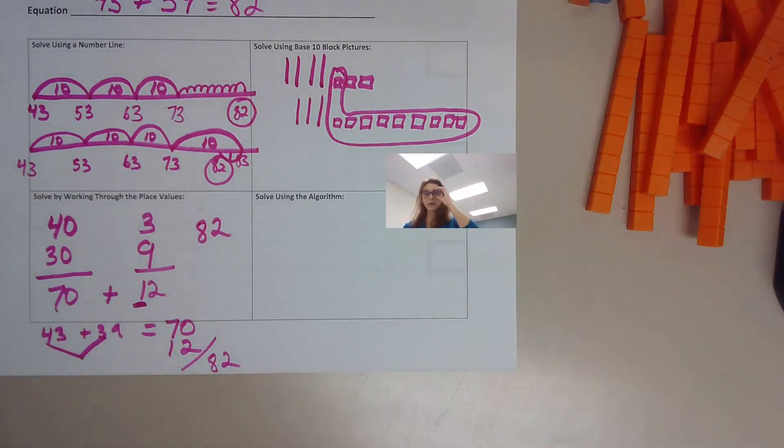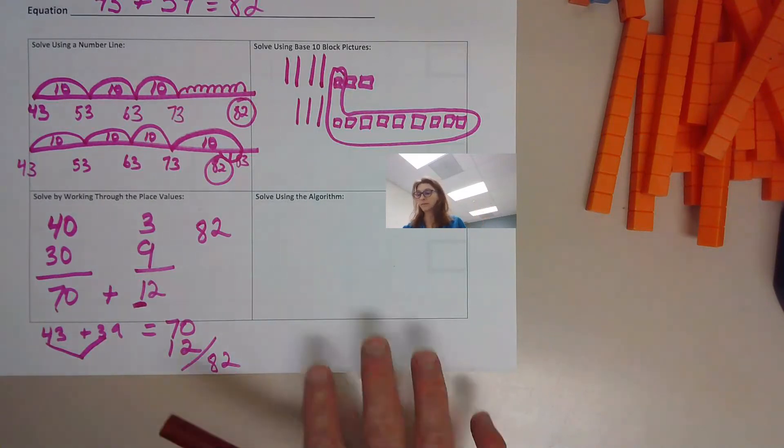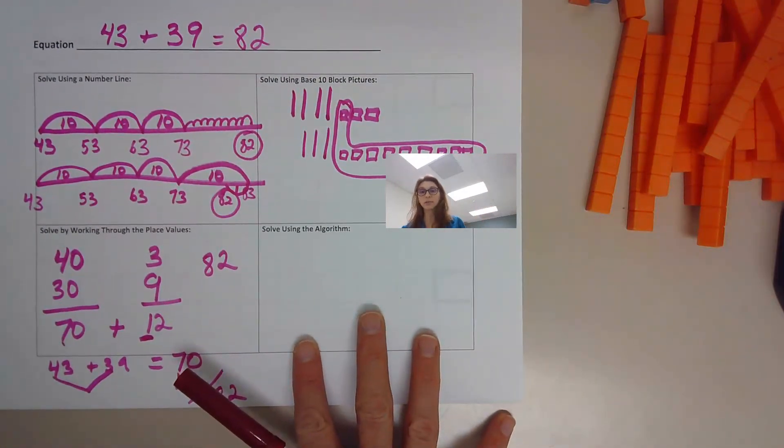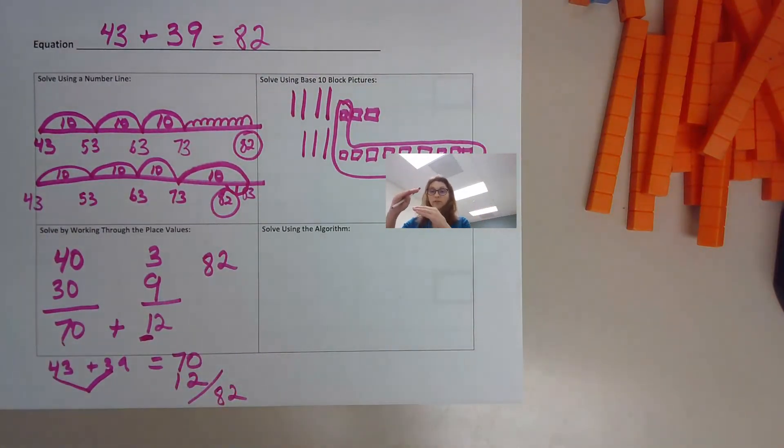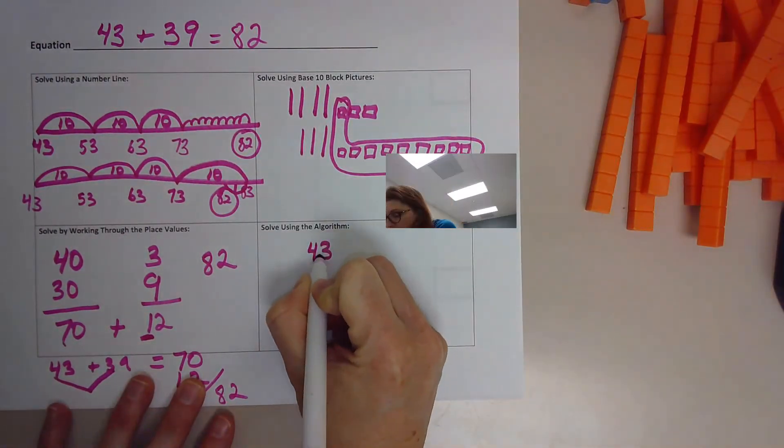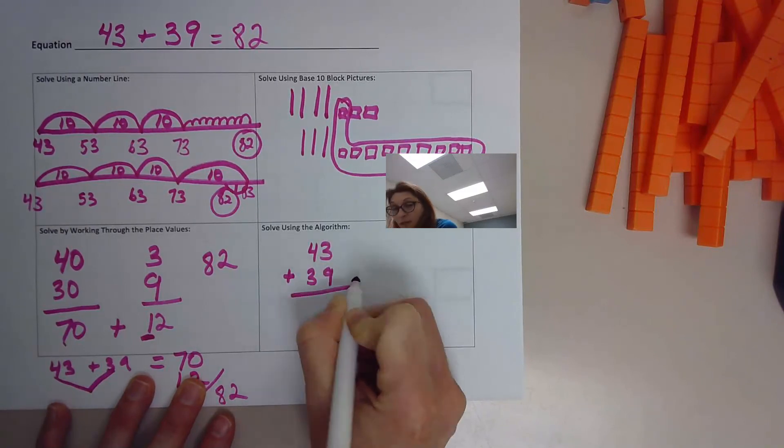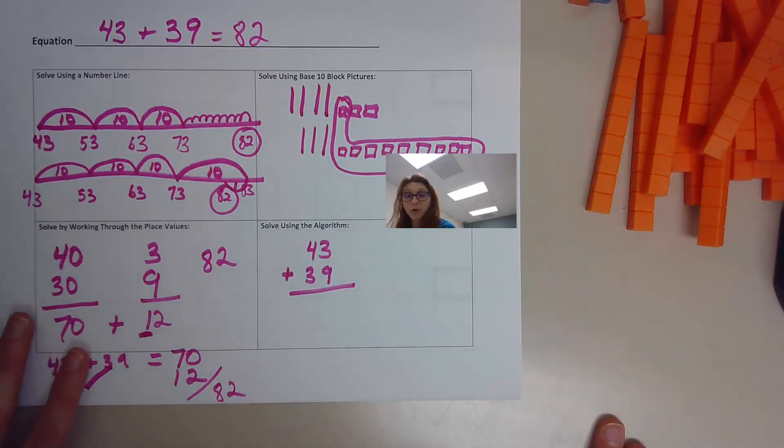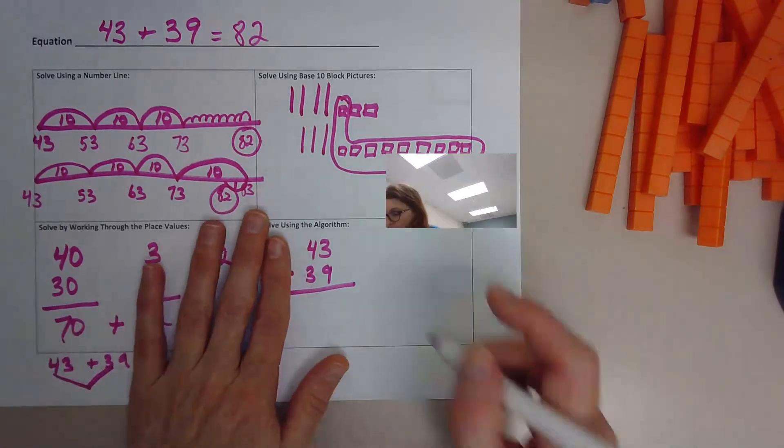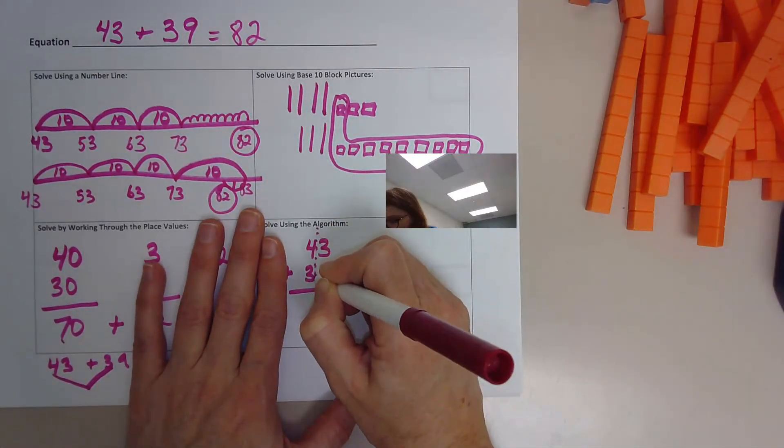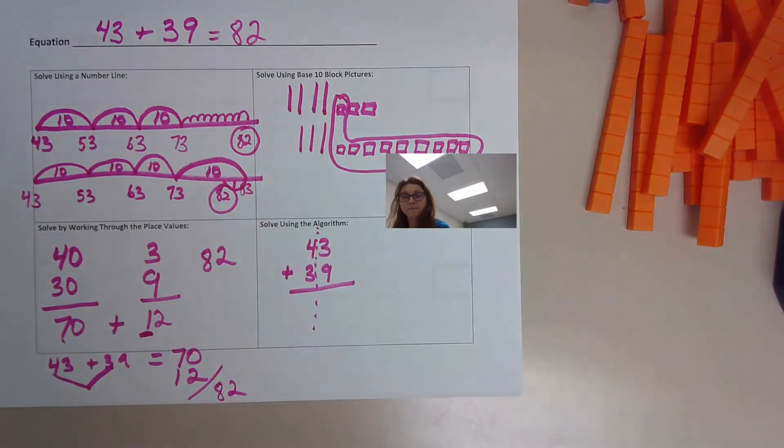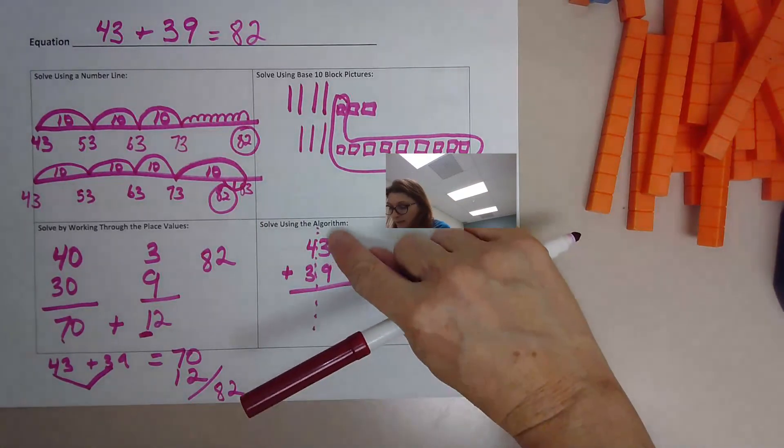Solve using the algorithm. Using the algorithm is just lining up your numbers, one on top of the other, and then adding them, making sure you're lining up your place values properly. Okay. So we have 43 plus 39. Okay. So now we're just going to add. So we look at our ones place value first. Let's do a little dividing line there. Okay.